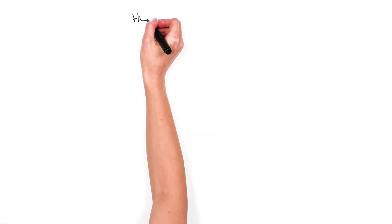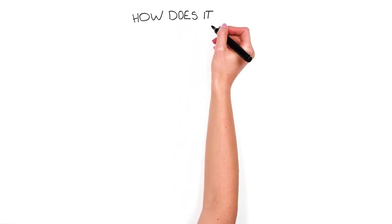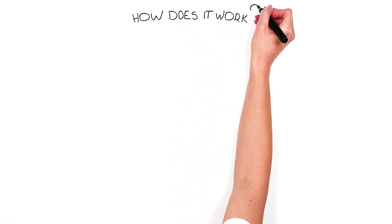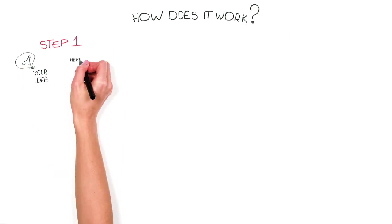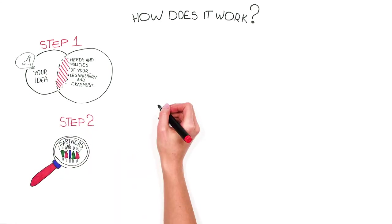If you have an innovative idea for a project to improve the quality of your youth work and you consider developing a strategic partnership project, take the following steps. Step 1: Test the relevance. Does your idea fit the needs and policies of your organization and Erasmus Plus? Step 2: Find partners who are interested in developing the idea with you.